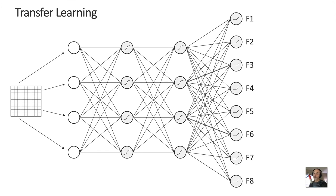We don't really know what those features are, but we know they are useful because they were useful to classify all the image types the neural network was originally trained on. For instance, one feature might represent greenness, useful for classifying trees as well as tennis balls. Another might count circle-shaped regions in the image, useful for classifying bicycles or traffic lights. Those features weren't defined in advance — they were learned from the training data and are useful for classifying images in general.